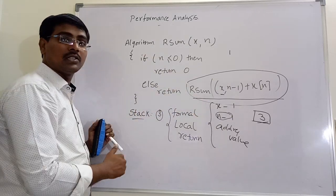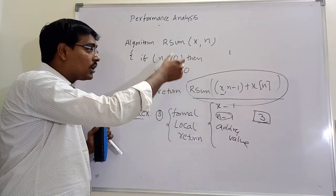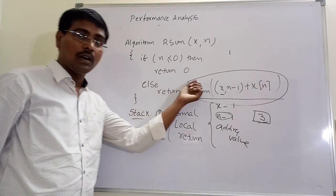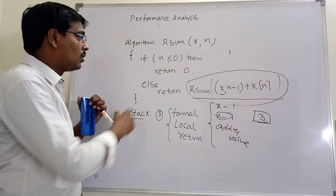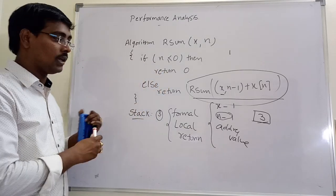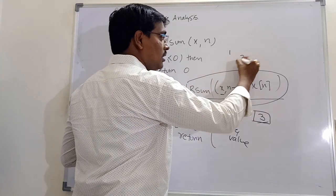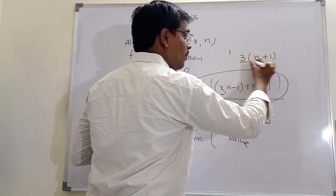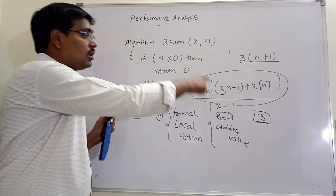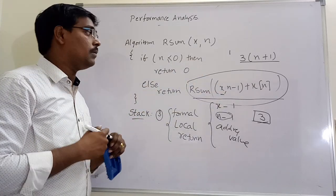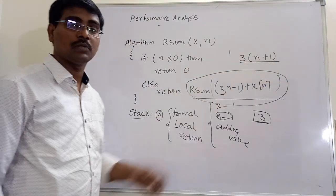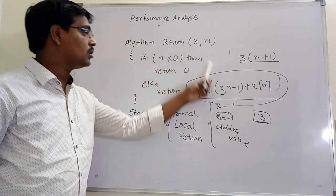We are calling r_sum n number of times. Since recursion calls itself until the condition fails, and the if-statement is called once, the total calls are n + 1 times. Each call needs three units, so total space is 3 * (n + 1). This algorithm doesn't contain a fixed part independent of input, so it requires at least 3(n + 1) units of memory to execute.